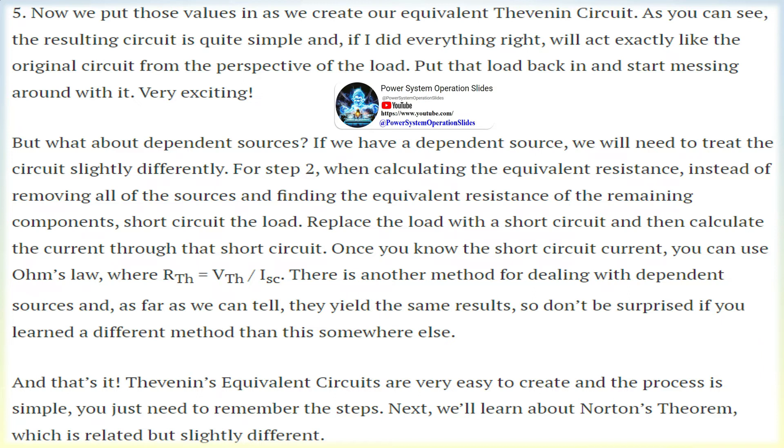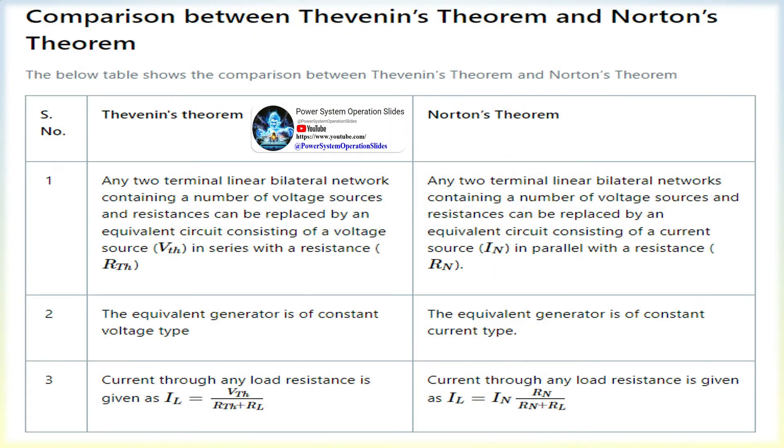The Thevenin equivalent only has characteristics from the point of view of the load-specified nodes A-B. Power dissipation for the Thevenin circuit is not necessarily the same as that of the real system. That being said, the power dissipated by the external resistor between terminals A-B is the same regardless of how the circuit is implemented.